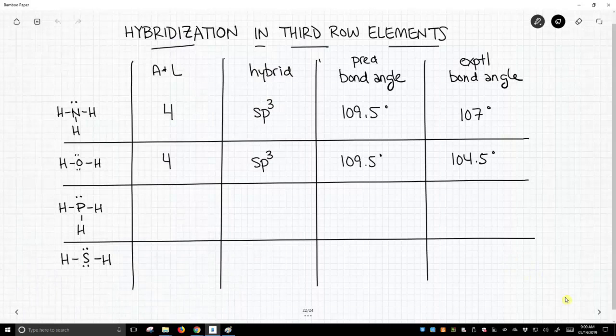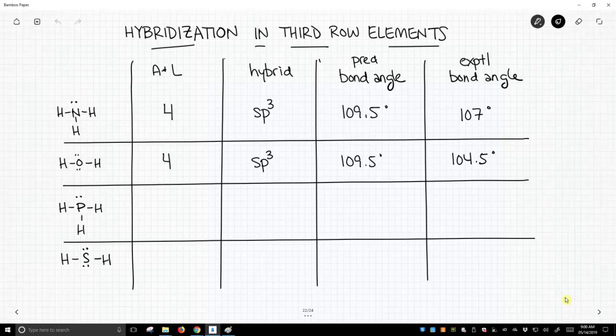So we have a nice table. On this table, the top two rows are molecules that we've seen before. The top structure is ammonia. The next structure is water, and we've talked about these before.